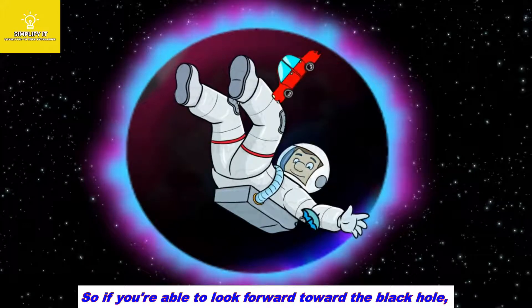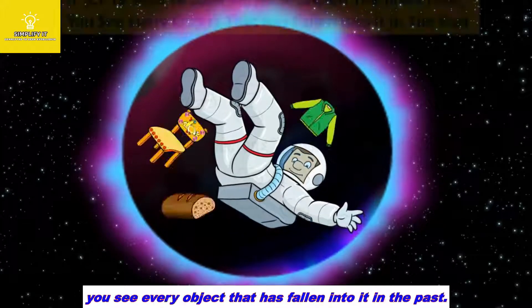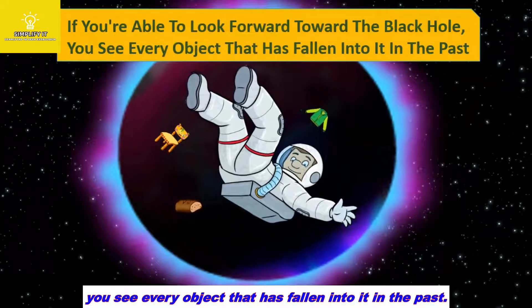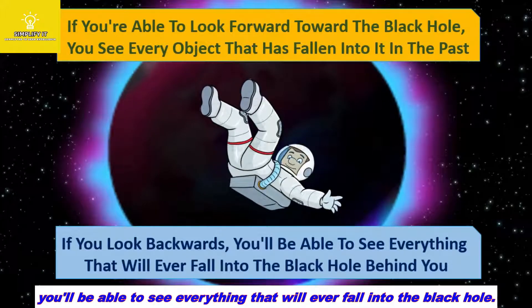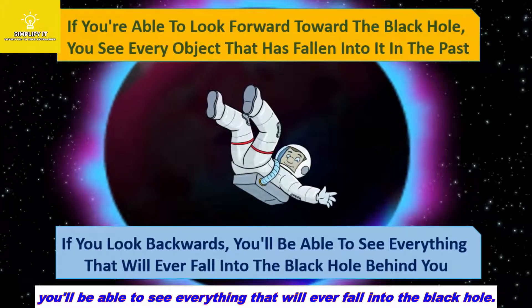So if you are able to look forward toward the black hole, you see every object that has fallen into it in the past. And then, if you look backwards, you will be able to see everything that will ever fall into the black hole behind you.